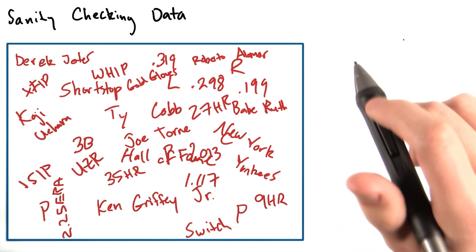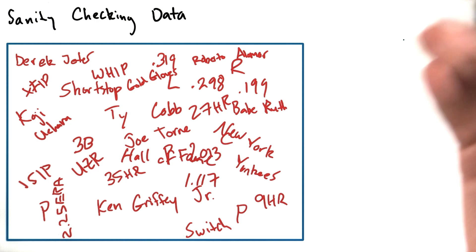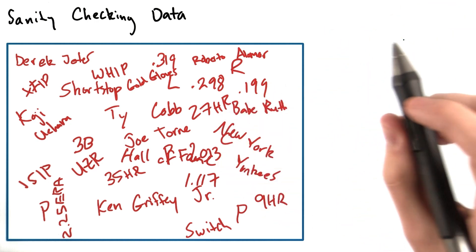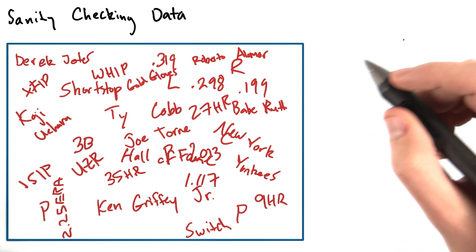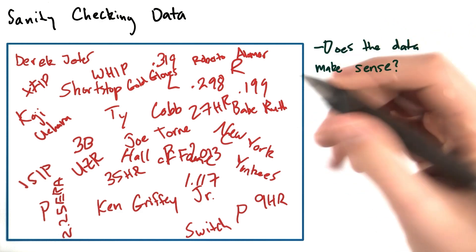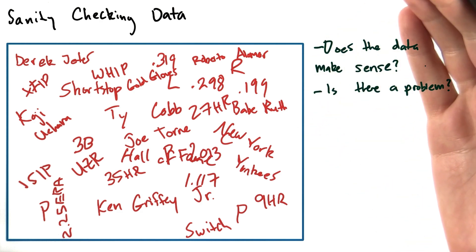Let's talk briefly about sanity checking our data. What does it mean to sanity check data? Well, put briefly, if we're sanity checking data, we want to quickly determine: does the data make sense? Is there a problem? Does the data look like I expect it to?